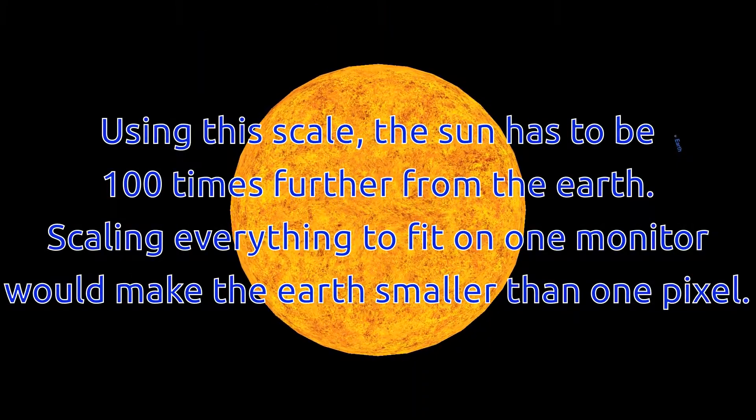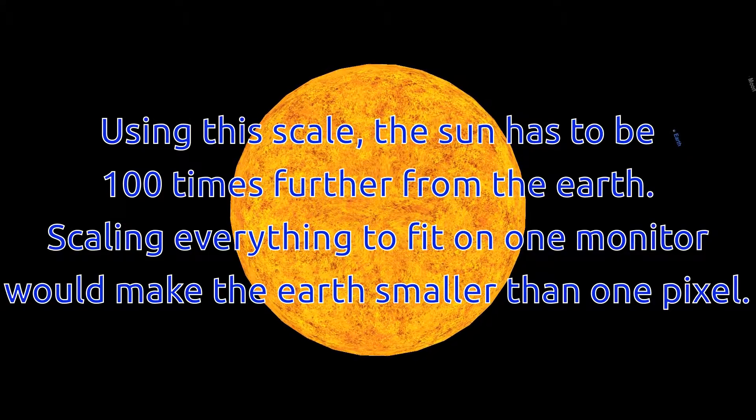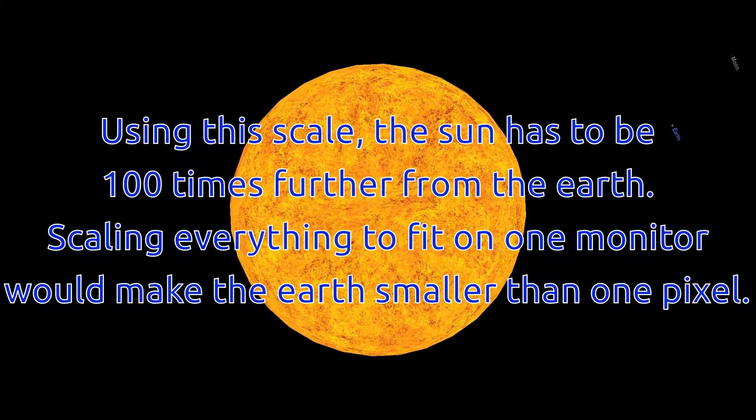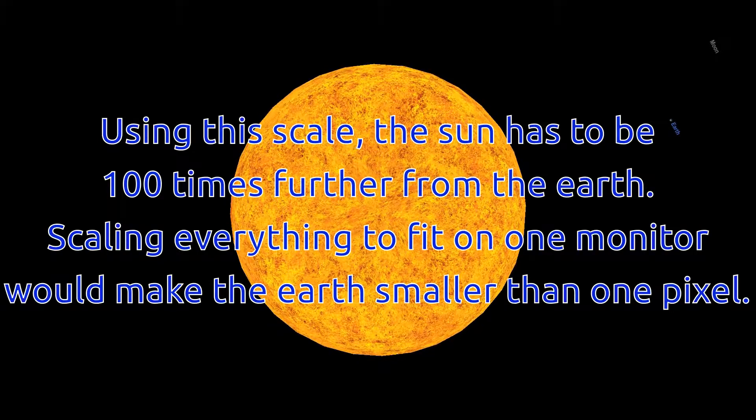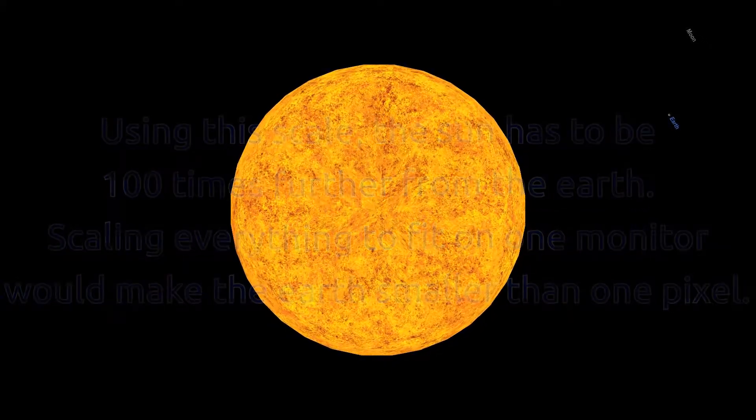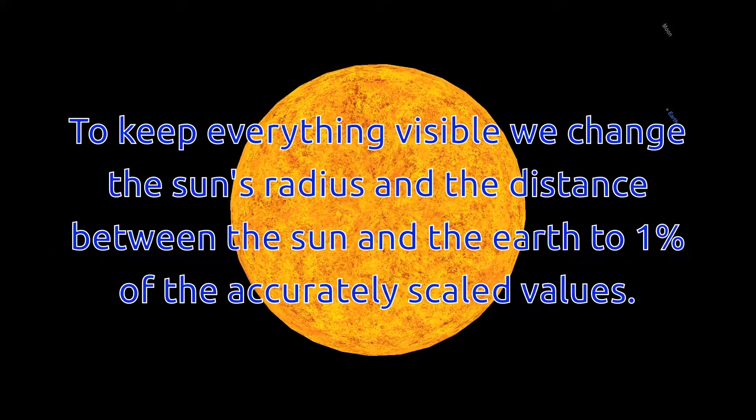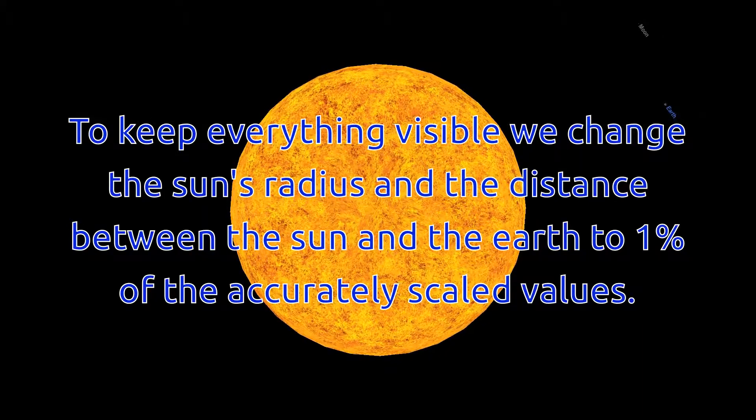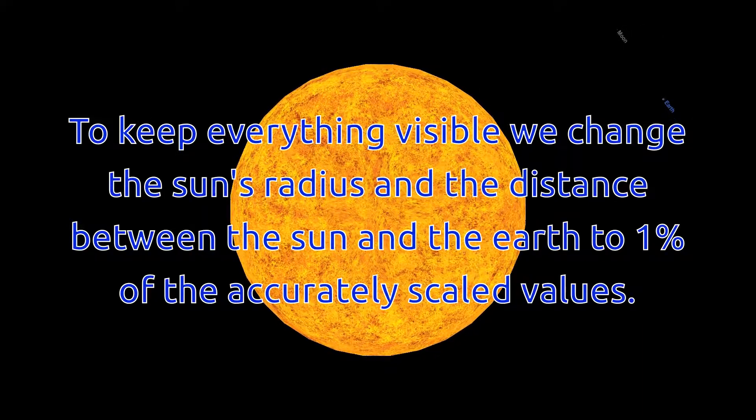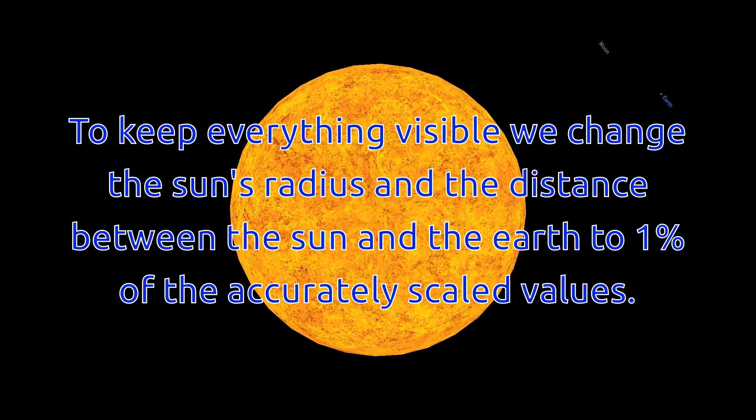Using this scale, the sun has to be 100 times further from the earth. Scaling everything to fit on one monitor would make the earth smaller than one pixel. To keep everything visible, we changed the sun's radius and the distance between the sun and the earth to 1% of the accurately scaled values.